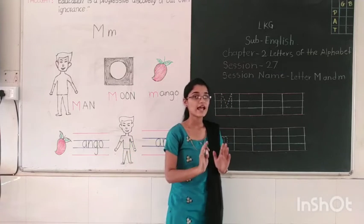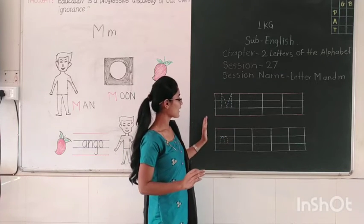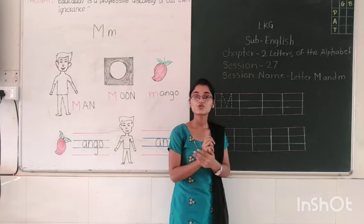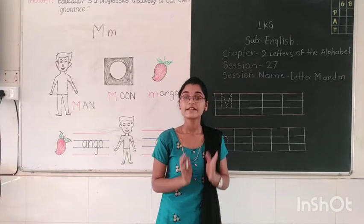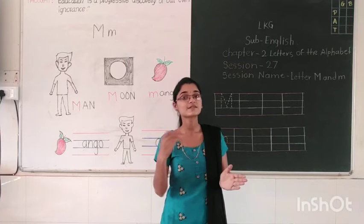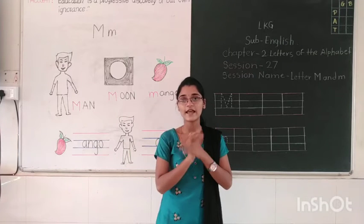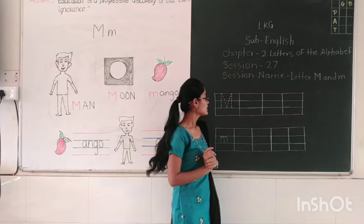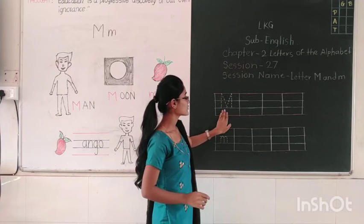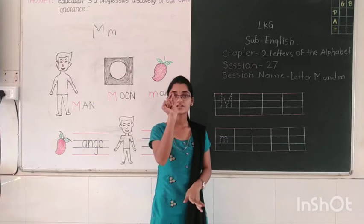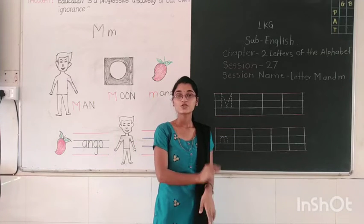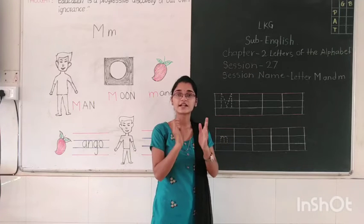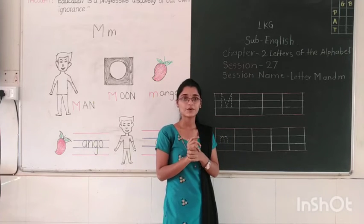As you can see, I have drawn four lines out here. Now I am going to teach you how to write capital M and small m in the four lines. Look at here — I have drawn some dotted lines. Here you have to trace these dotted lines and write capital M.